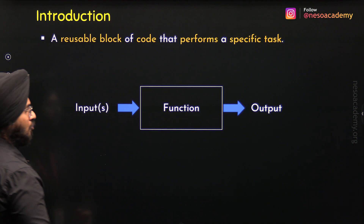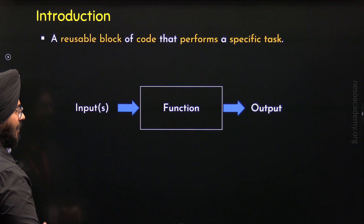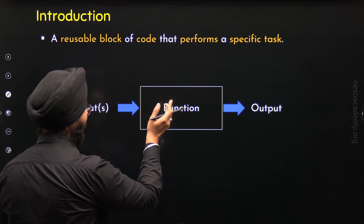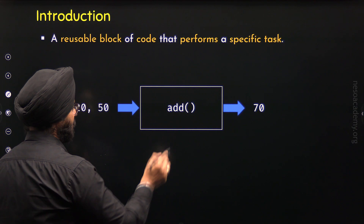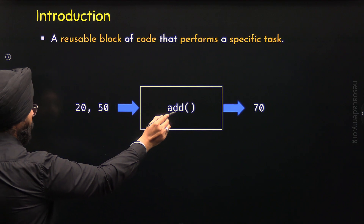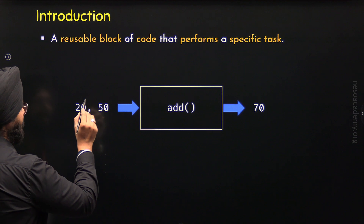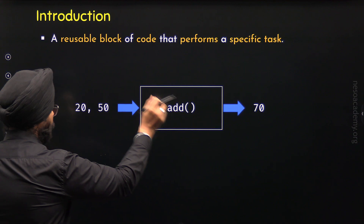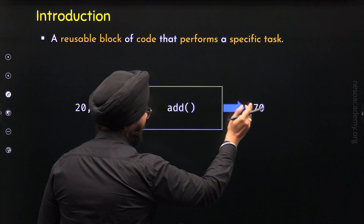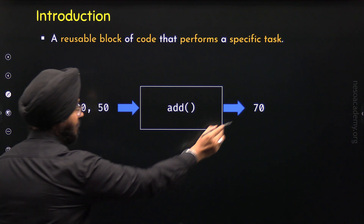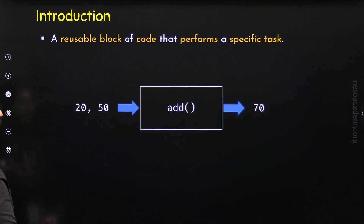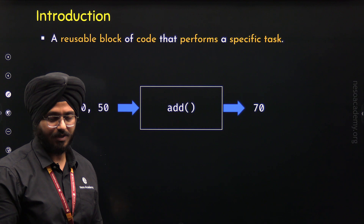Let's take an example to properly understand this. Let us assume we want to add two numbers. For this purpose, we can define a function called add. This add function can receive inputs. The two inputs we pass to this function are 20 and 50. This function will operate on these inputs and then produce the output 70. We are getting 70 because 20 plus 50 is 70. So with this, we have understood what a function is.